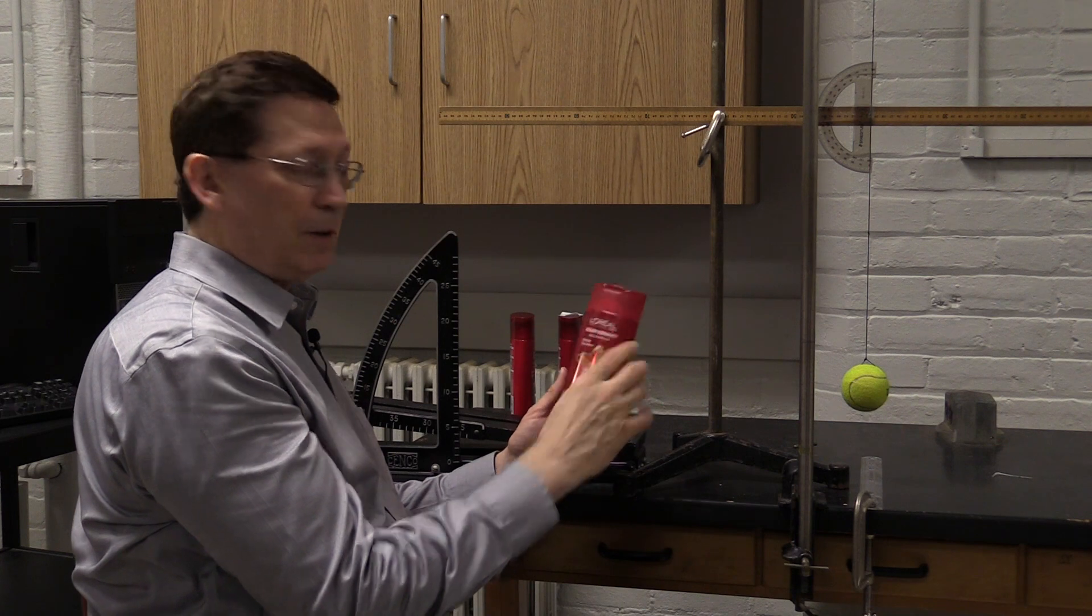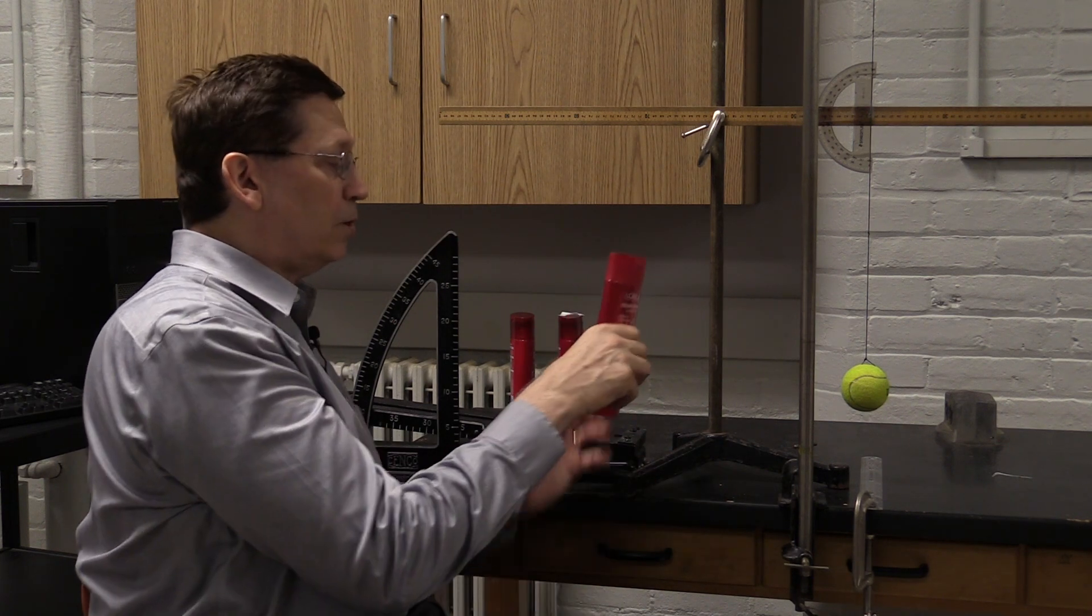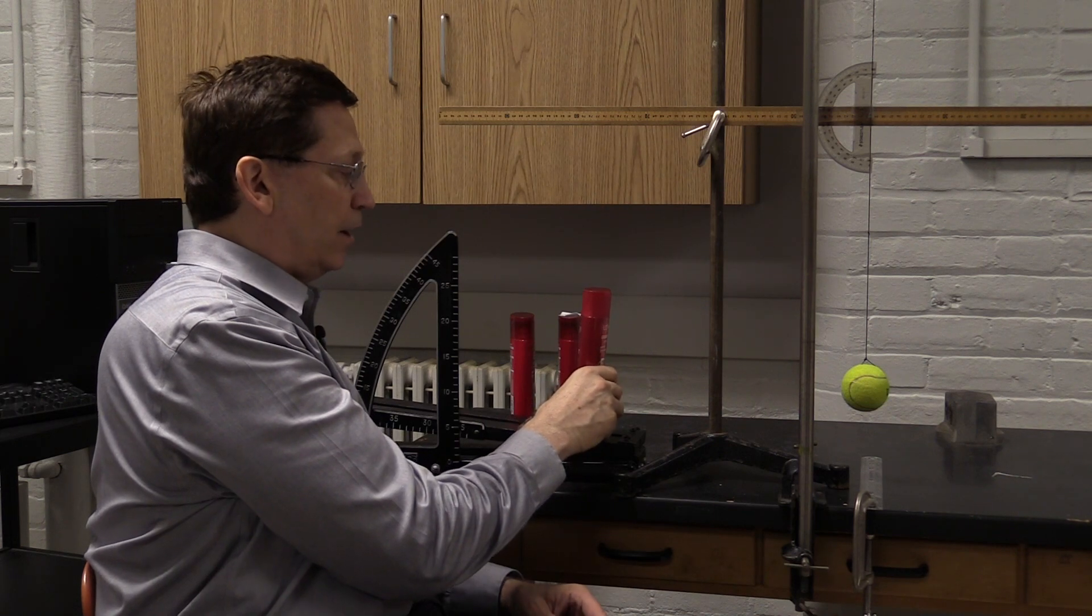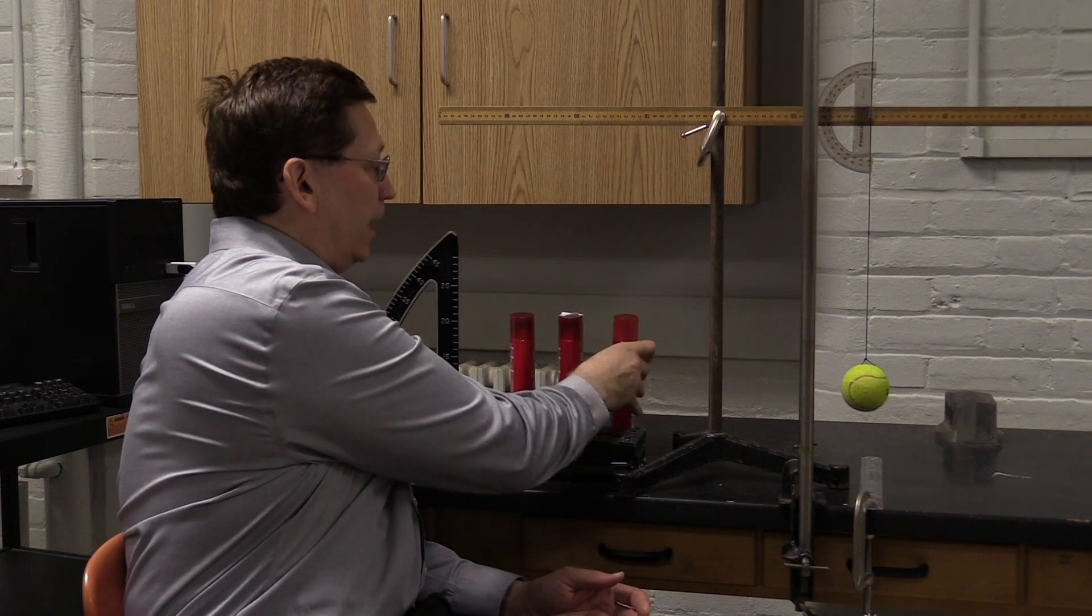But for this completely empty bottle, the center of mass now is up near the top, up near the middle. So when I set that on the 7 degree ramp, you can see it just does not stay.